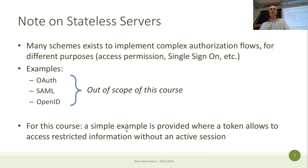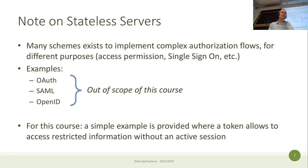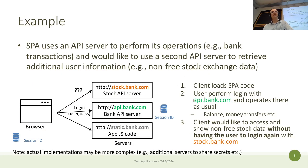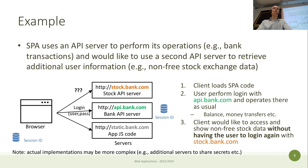For this course we'll implement a simple example. Starting from a published starting point on GitHub, we'll create and use a token to access restricted information from a server with which we don't have an active session. We'll apply it in a simple case — our question-and-answers toy application.